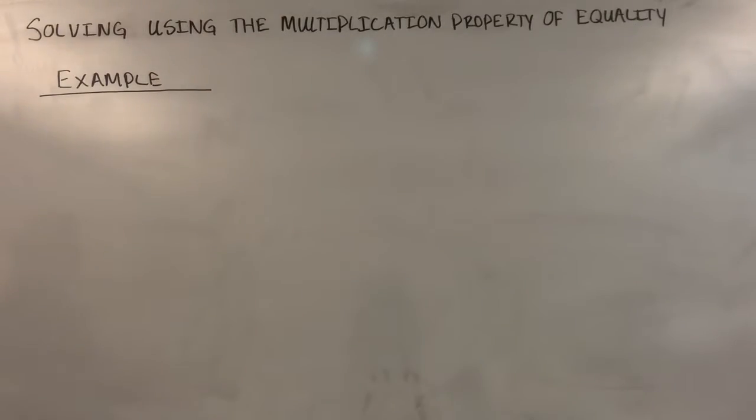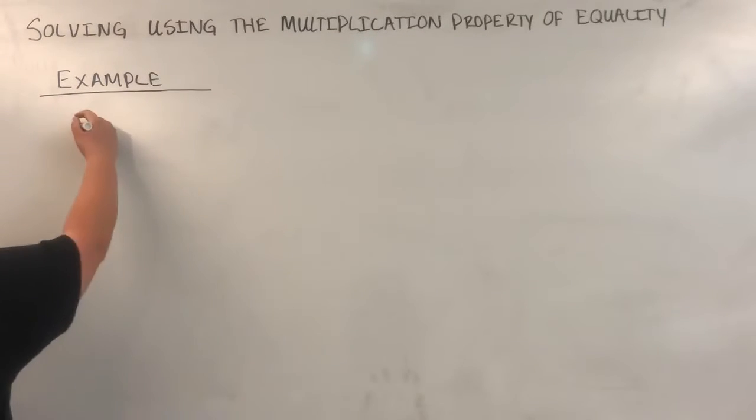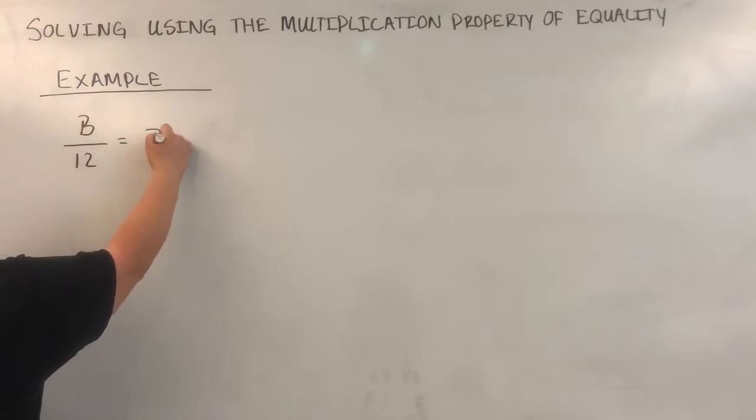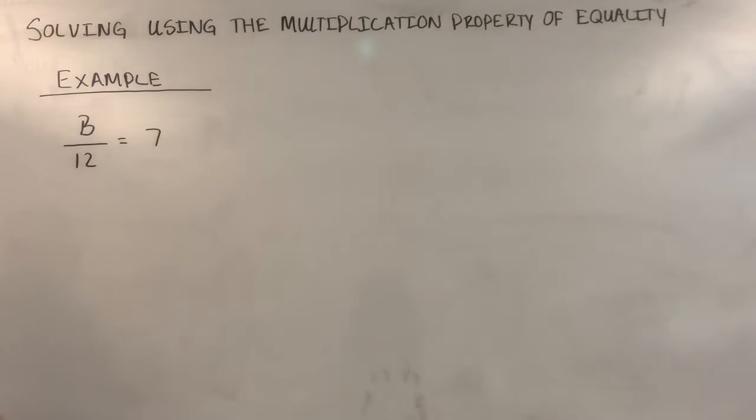The first example that we're going to look at is b over 12 equals 7. So we're trying to solve this equation for b. Now to solve this equation for b, I need to multiply both sides of the equation by 12. The reason for this is because b is being divided by 12. I need to get rid of this, so to move it, I have to cancel out division. Multiplication cancels out division if you multiply by the same thing that you're dividing by.